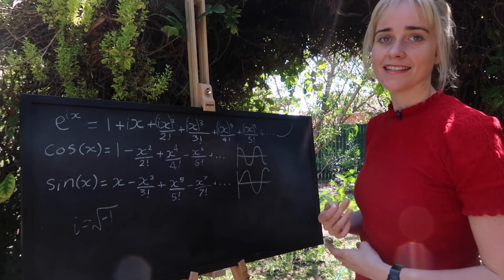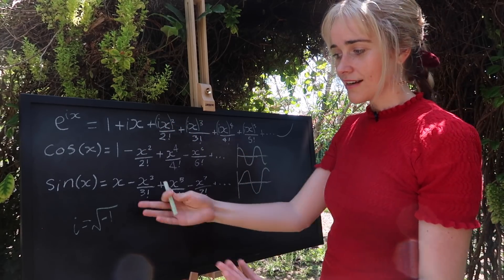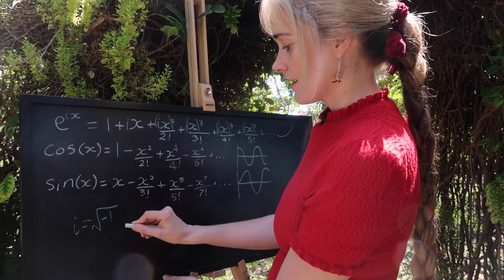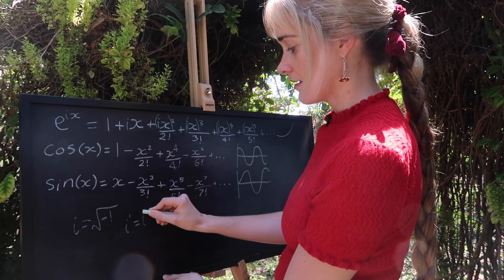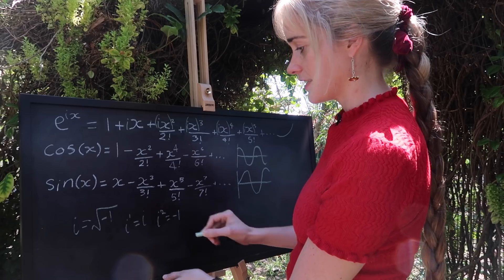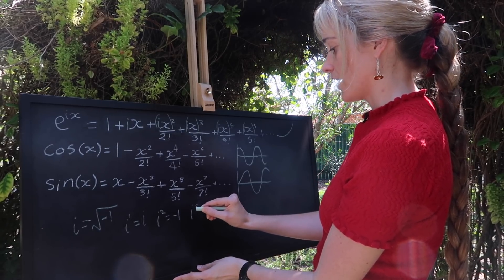And there we go. We now have our function e to the i x. But what do some of these terms do? What can i really do for us? Let's have a look. So i to the power of one is just going to be i, but i squared is going to be minus one.